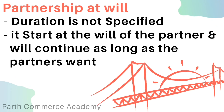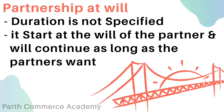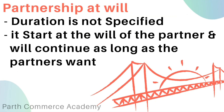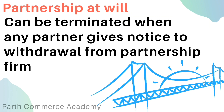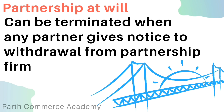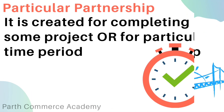Partnership at will: the duration of this type of partnership is not decided. It starts at the will of partners and continues as long as partners want. It can be terminated when any partner gives notice of withdrawal from the partnership firm. So the partnership depends entirely on the will of the partners.